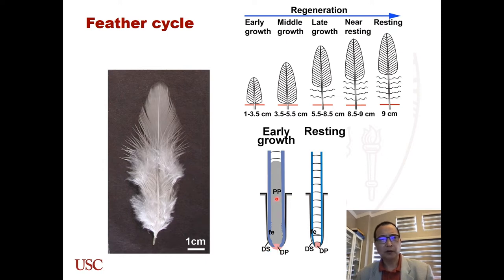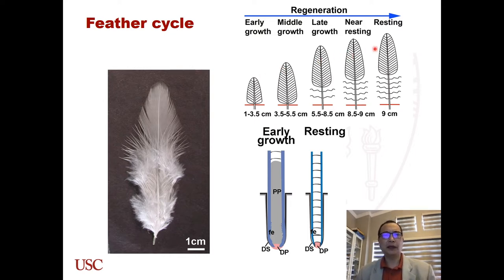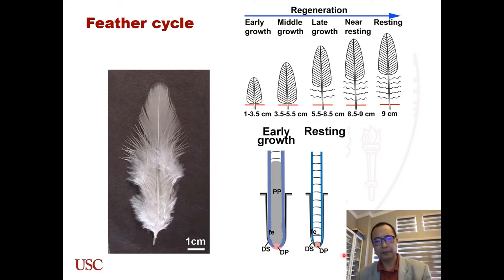When the feather regenerates, it goes through different developing stages: early growth, middle growth, late growth, and then stops at the resting phase. In the resting phase, we cannot find the pulp — the pulp has been degenerated.